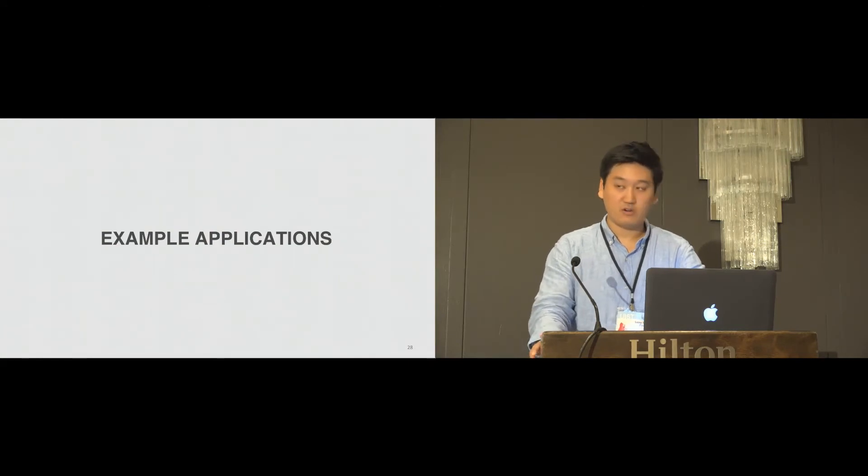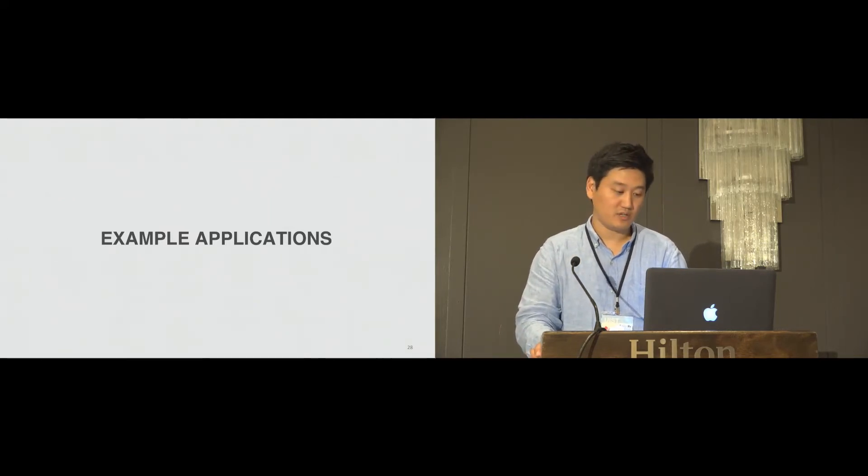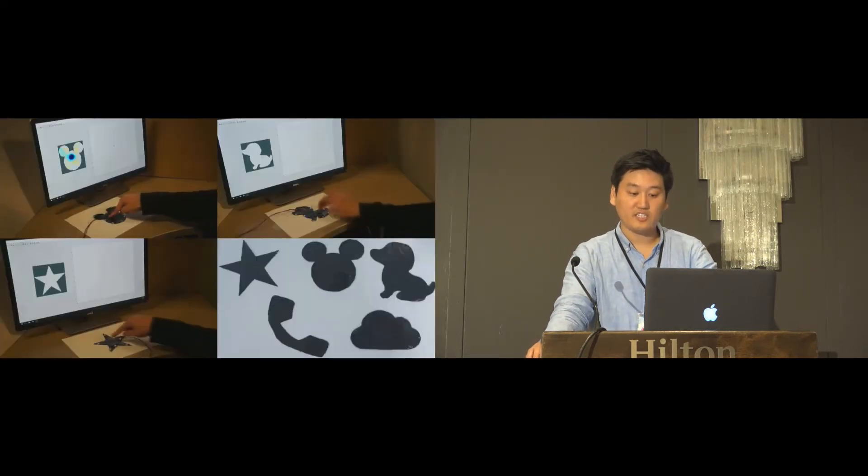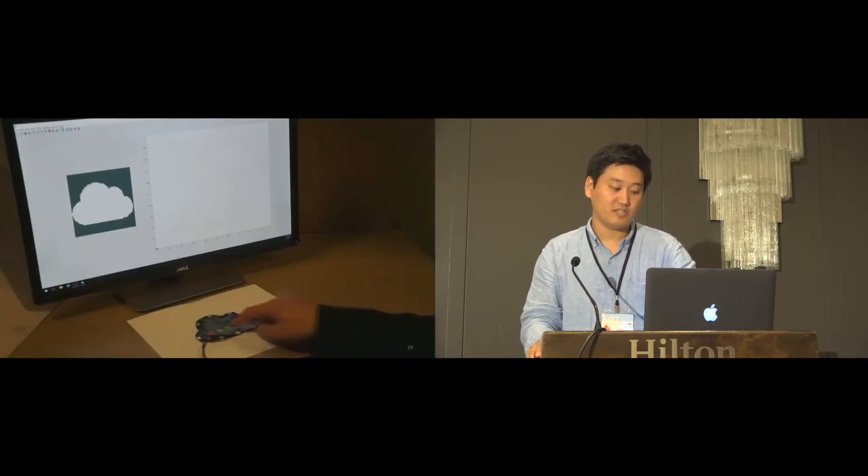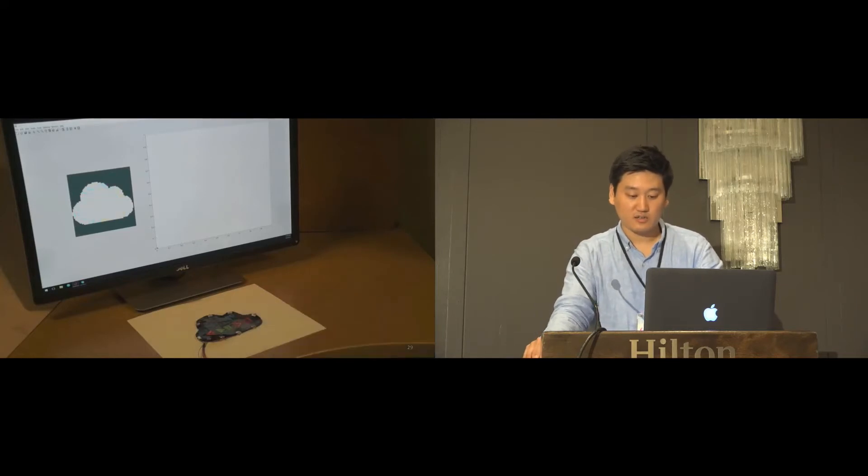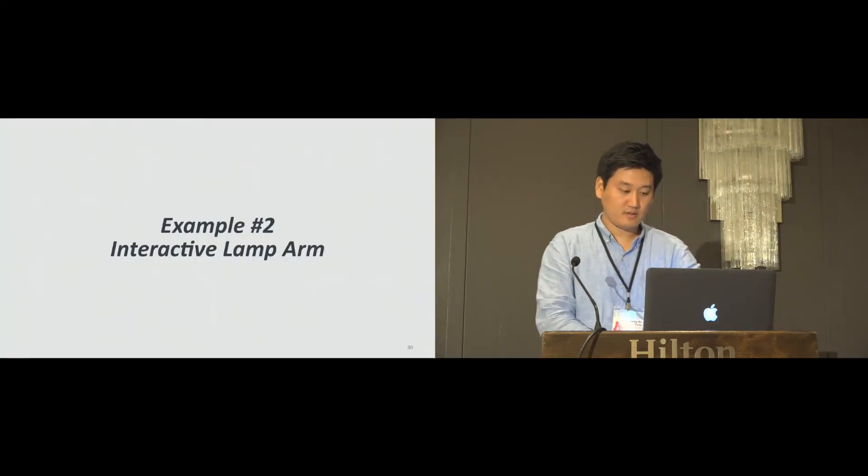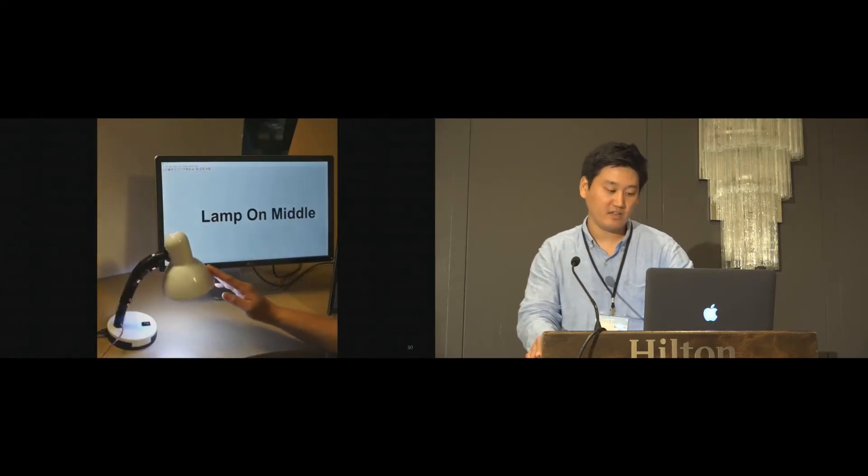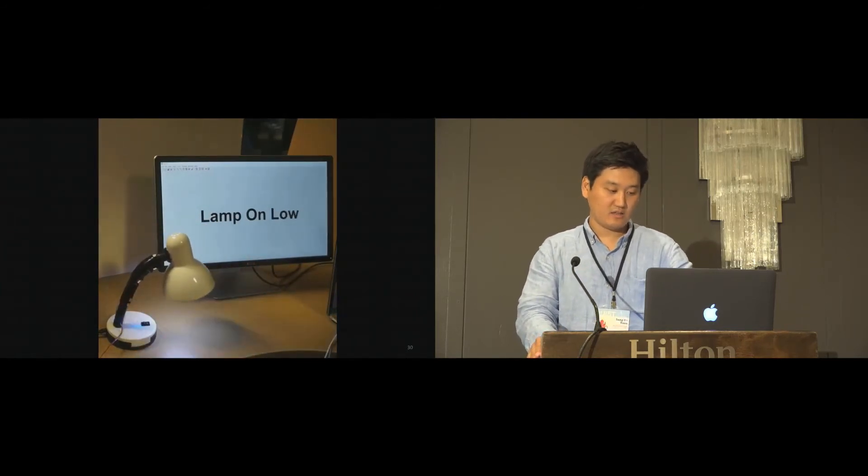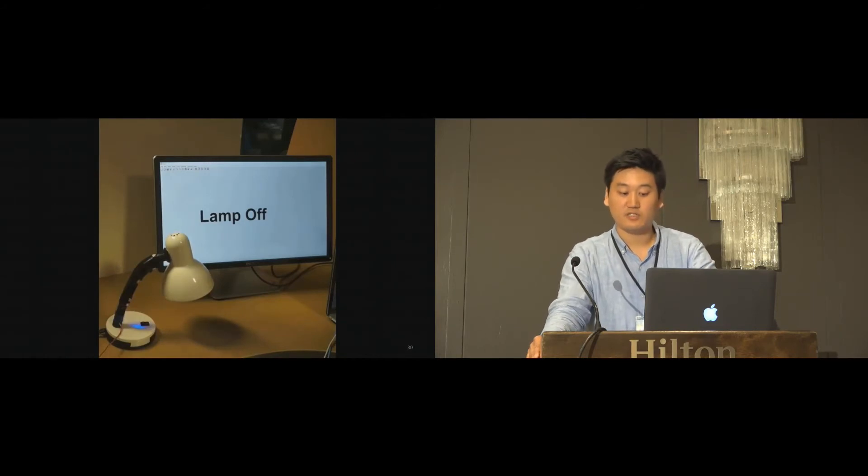So what can you do with our prototype? I'm going to showcase five examples of applications. In this example, a user can design and make various shapes of interfaces using iSoft. As you can see there are arbitrary 2D shapes of sensors and these sensors can work instantly with discrete and continuous contact sensing capabilities. Also in this example, we attach our sensor to an adjustable lamp arm. By attaching our prototype, the lamp arm becomes capable of sensing bending and discrete contact and swiping. We can also squeeze our sensor to turn the lamp off. This example demonstrates the versatile sensing capability.